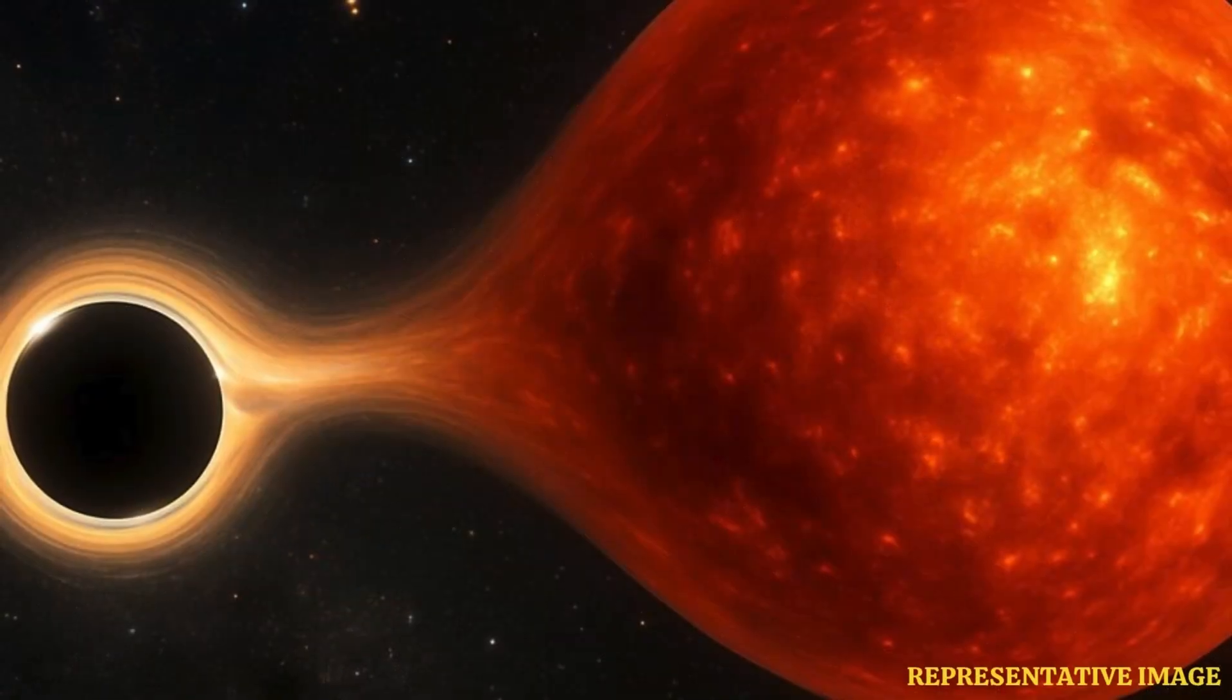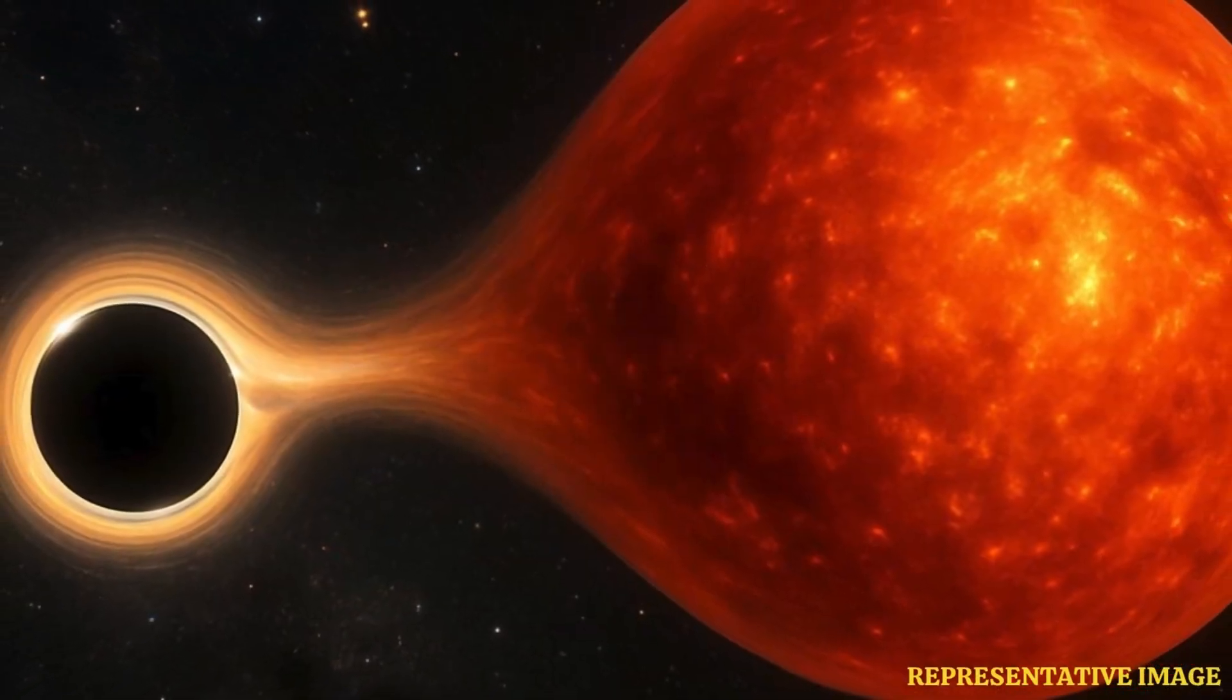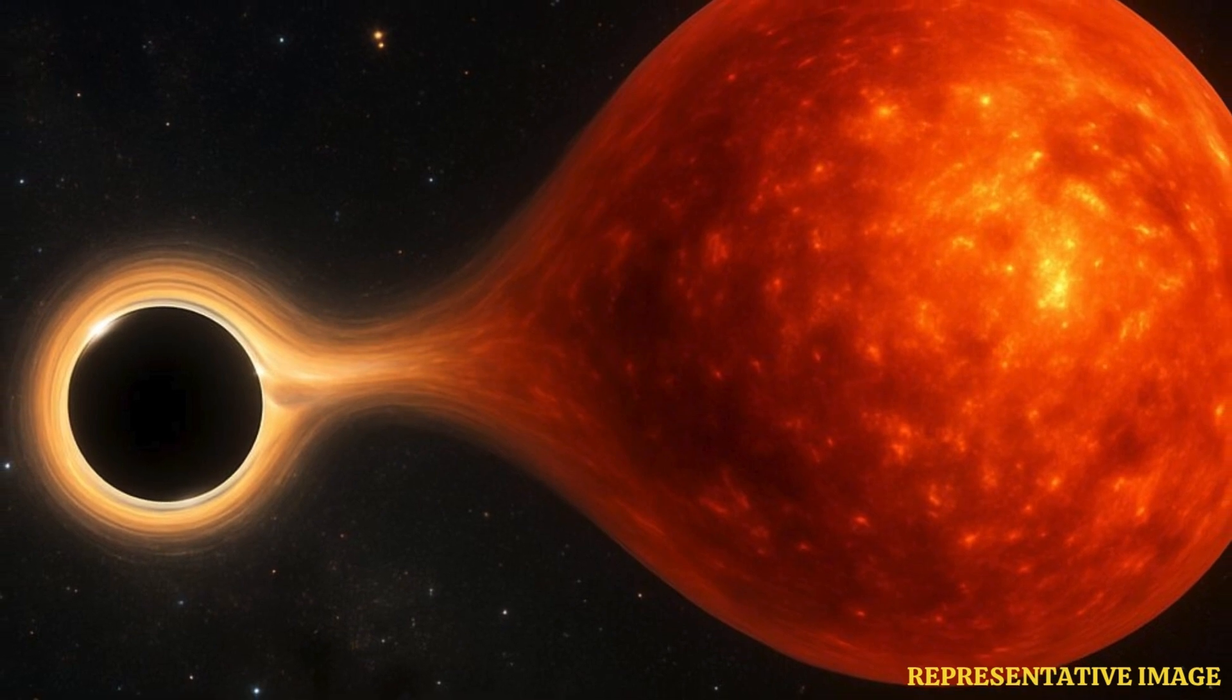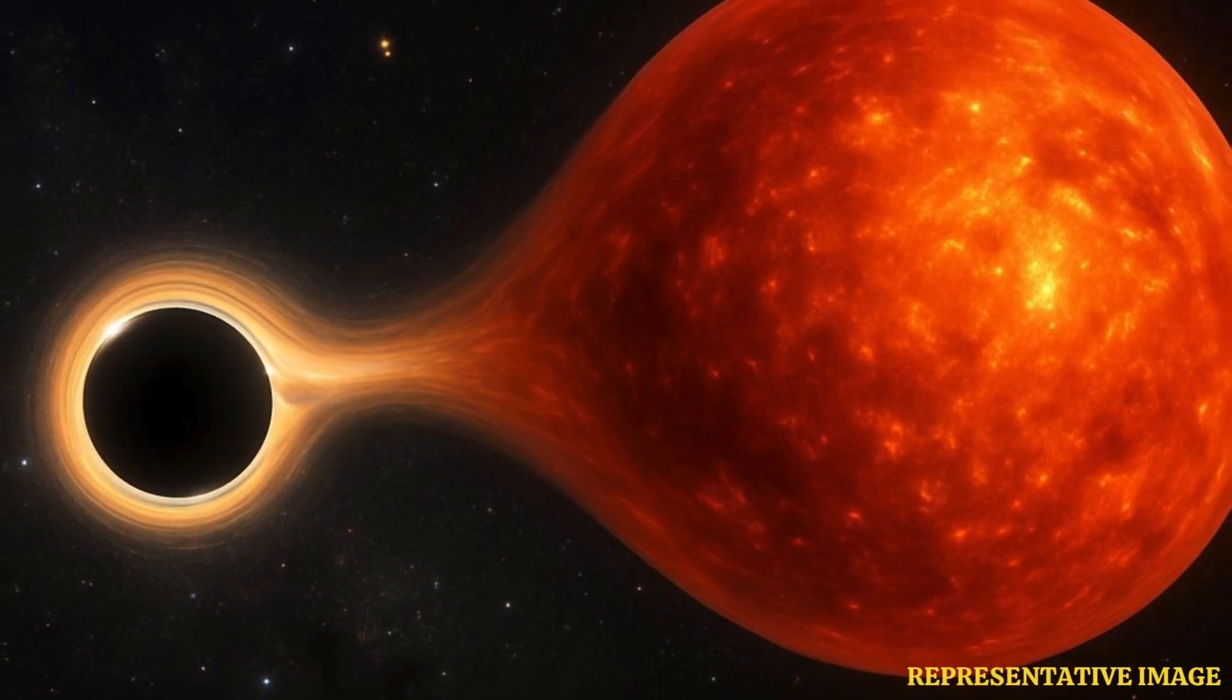Right, exactly. Black holes are, well, black. They don't give off light or radio waves or anything our telescopes usually pick up. So it was indirect. Like finding footprints instead of the animal itself. That's a great analogy. They watched its companion star, the red giant. The unicorn's gravity is actually pulling on that star.